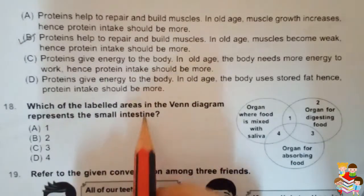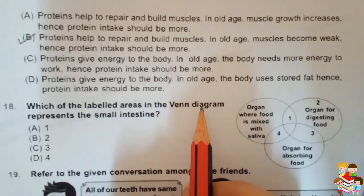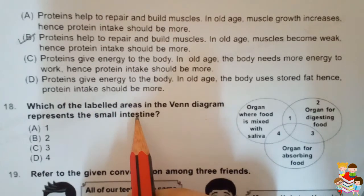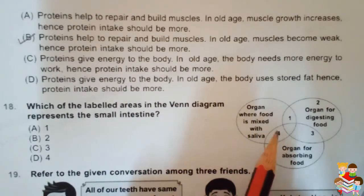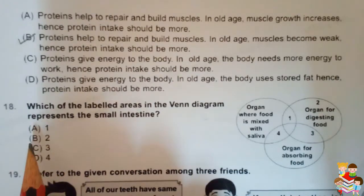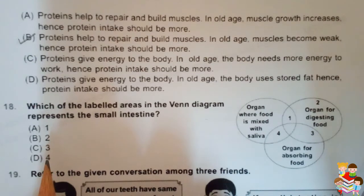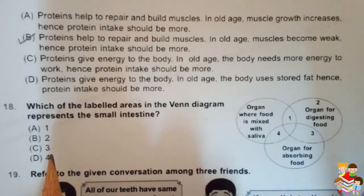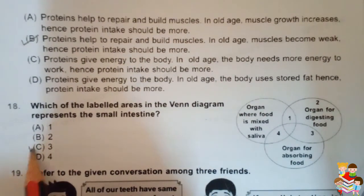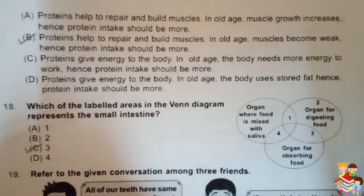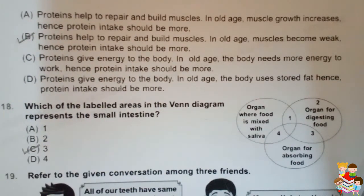Question 18: Which labeled area in the Venn diagram represents the small intestine? The correct answer is C, 3. Complete digestion of food takes place in the small intestine. Also, absorption of digested food into the blood takes place in the small intestine.